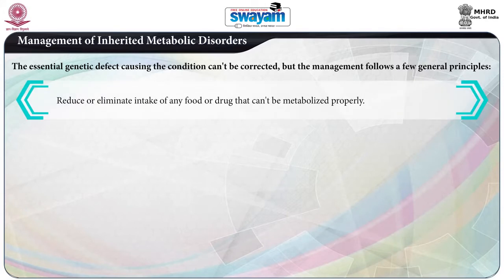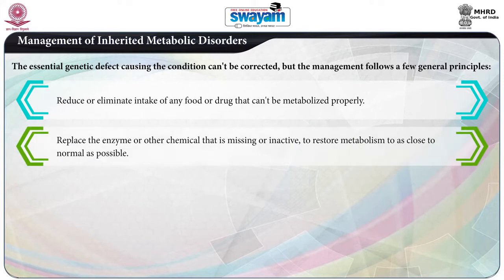The first principle is to reduce or eliminate the intake of any food that cannot be metabolized properly — for example, lactose-free milk or vegetable milk for lactose intolerance. The second approach is to replace the enzyme or other chemical that is missing or inactive, in order to restore the metabolism as close to normal as possible.